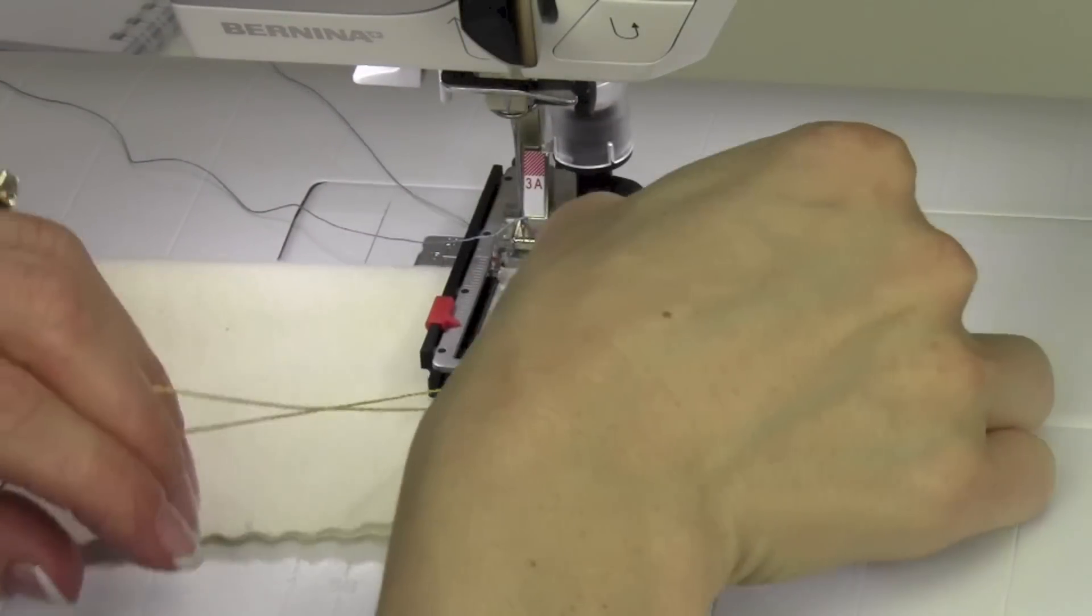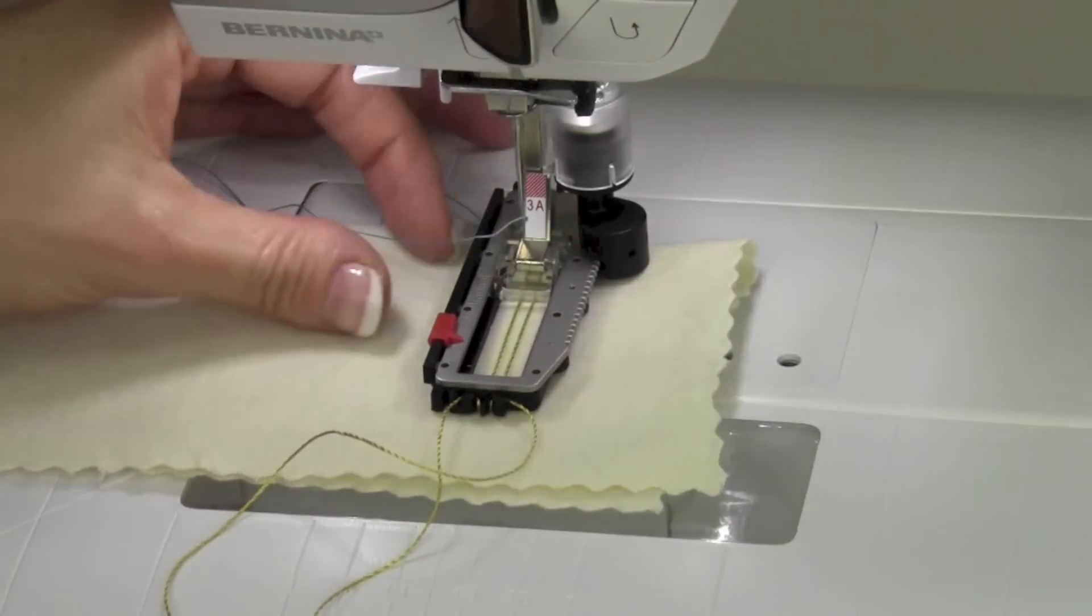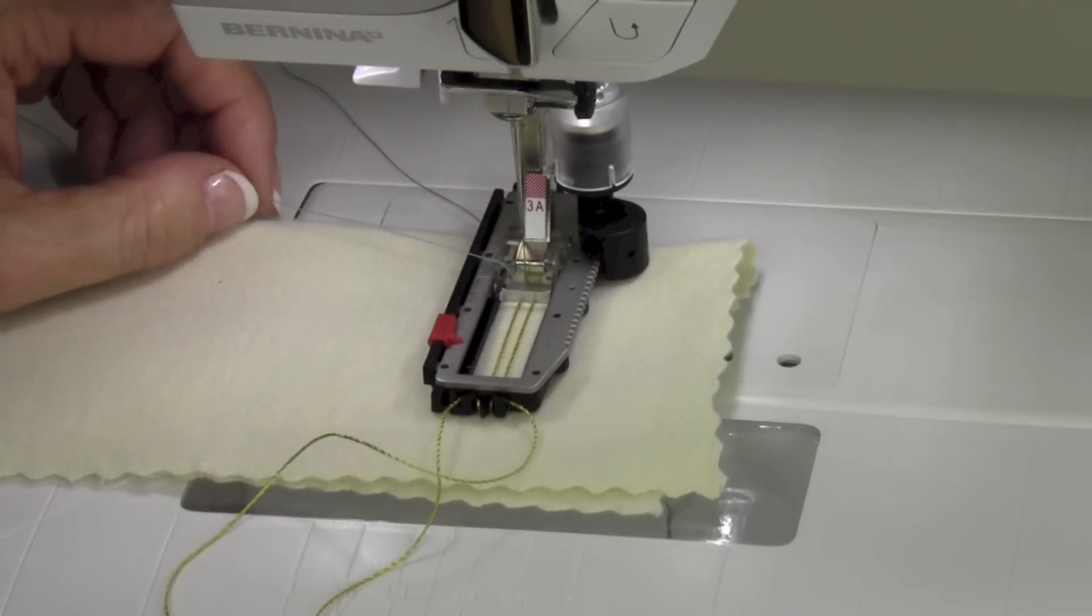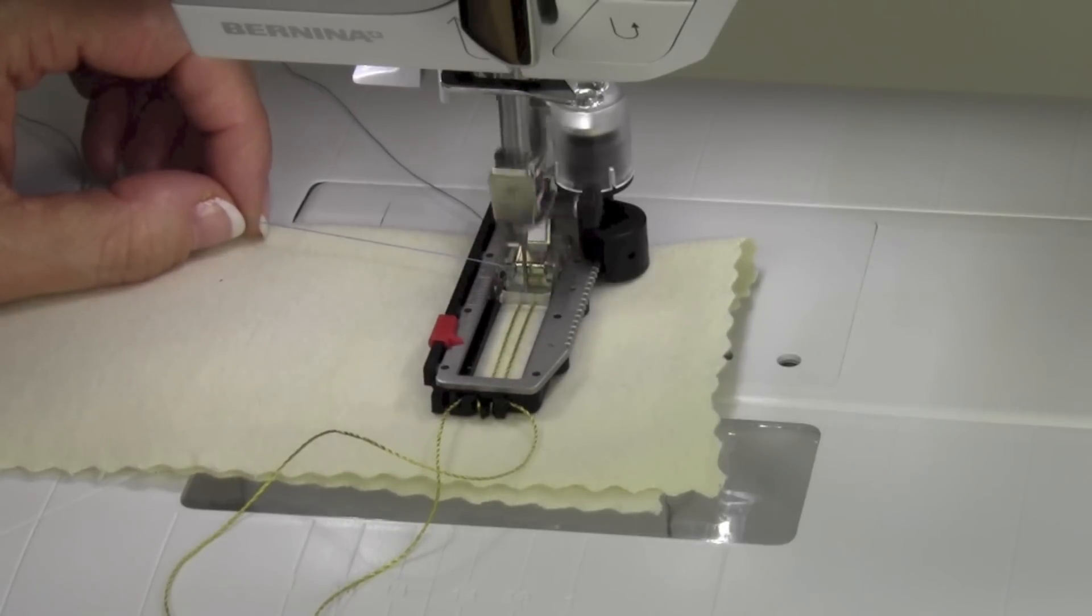Flip this up, have your starting place, and start to sew. If your thread is up top, above your foot, just go ahead and hold onto it until you take a few stitches, and then you can stop and cut it off there.